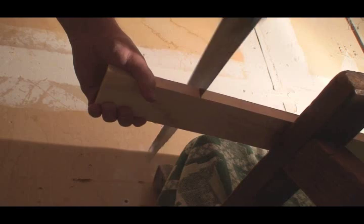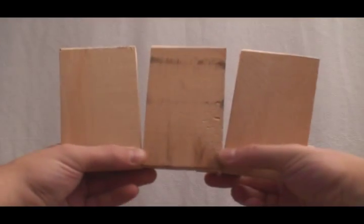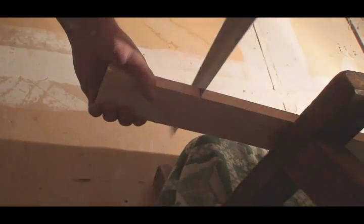Cut three pieces of your half inch by three inch strip of wood to four and a half inches long. Cut another two pieces to four inches long.